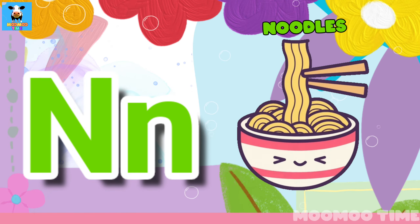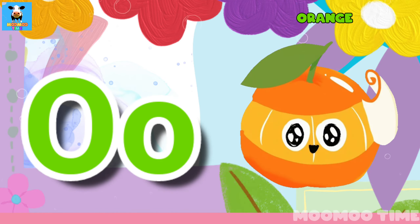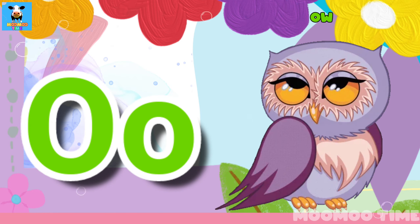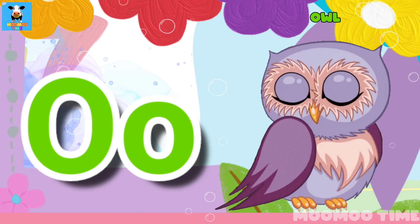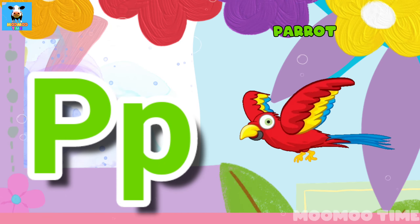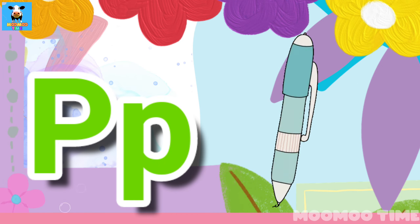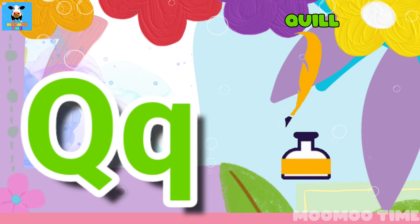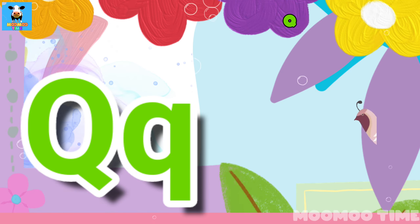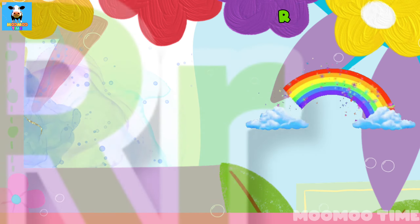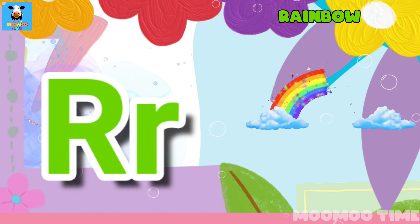I'm for noodles, O for orange, O for owl, G for parrot, G for fenn, G for quill, R for rainbow.